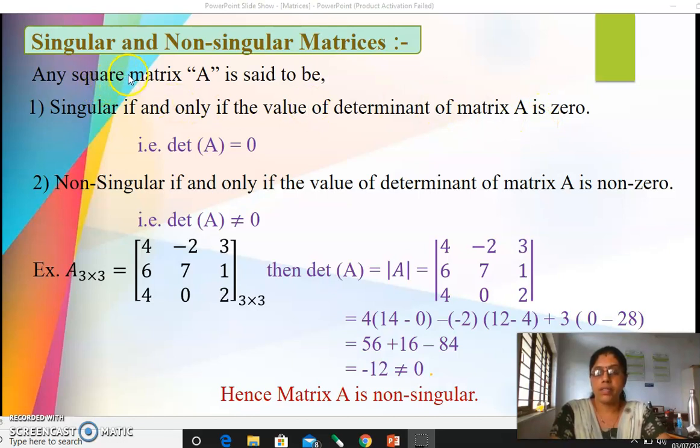To check whether the matrix is singular or non-singular it should first be a square matrix. For square matrices only we can check the singularity and non-singularity because we have to find its determinant value. And for determinant the number of rows and columns should be same. Hence for square matrices where the number of rows and columns are same we can calculate determinant value and hence we will calculate the singularity.